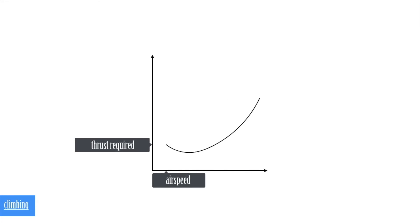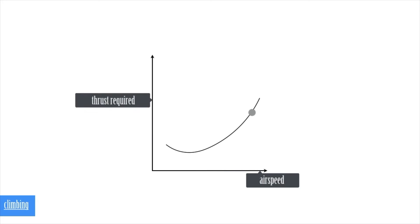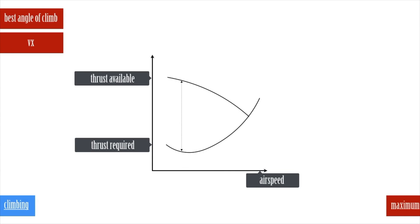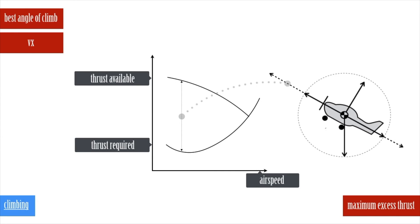The thrust required curve suggests that generally you need more thrust if you wish to fly faster. Comparing the two curves, the greatest difference between the thrust required and thrust available is the maximum excess thrust, which happens to be your best angle of climb airspeed.